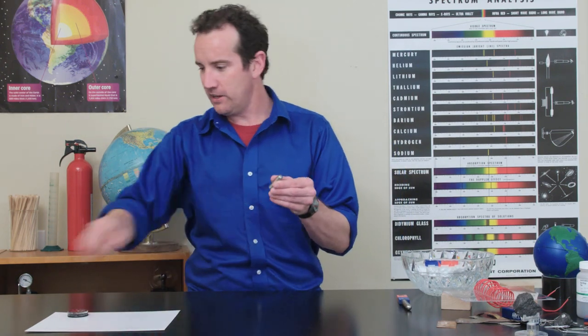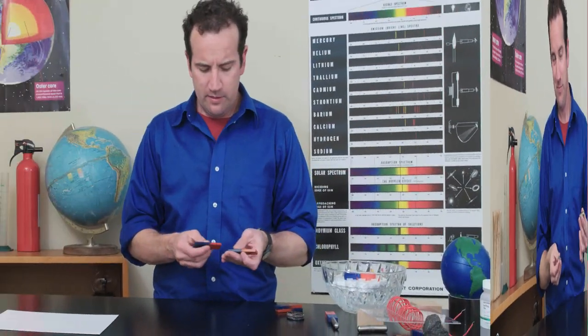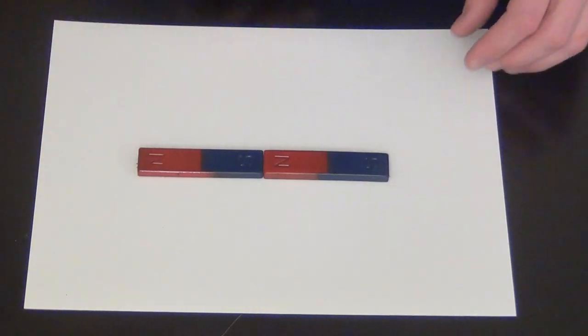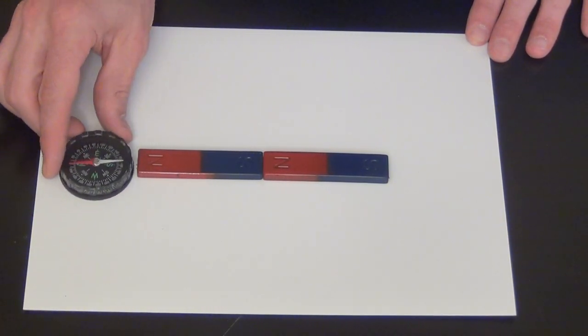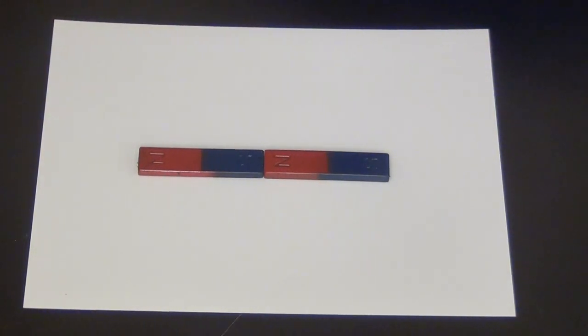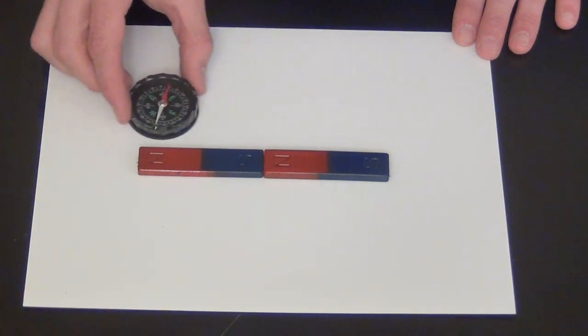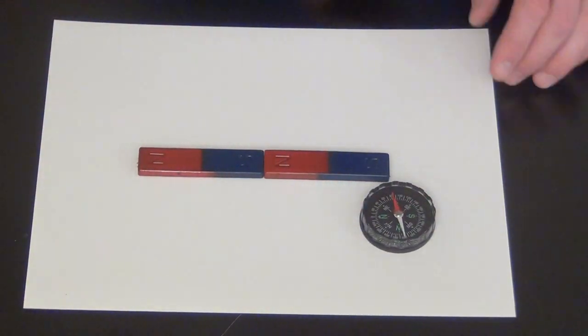When you break a magnet in half, you don't get a north and a south. You get a north-south, north-south. That means that if I take two magnets and put them together like this, I've actually constructed a larger magnet, and you can see right here, it's out of north and into south. Just as if it was the construction of one big, long magnet.